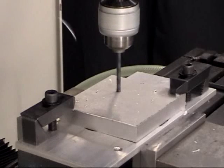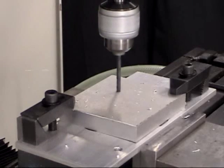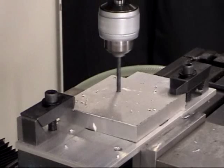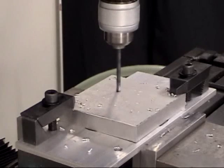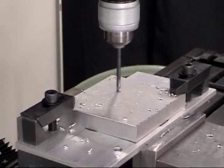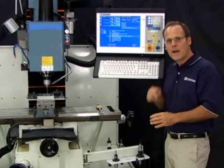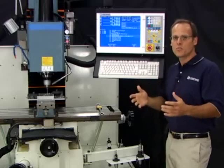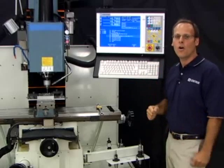And remember we did a deep hole cycle. So you see it pecking down the amount that we programmed, retracting completely out of the hole to clear the chips. There are two other drilling cycles as well. There's a chip breaking which will stay in the hole and just back up a little bit. And then there's just regular drilling which will feed right down and retract out of the hole.